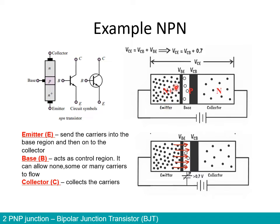So the emitter is the slightly more doped region, whereas the collector is the region that is moderately doped by the impurities. And in the middle, we have the P region, which of course serves as the base. Let's see why we call the emitter the one that sends carriers, whereas the collector is the one that collects carriers.